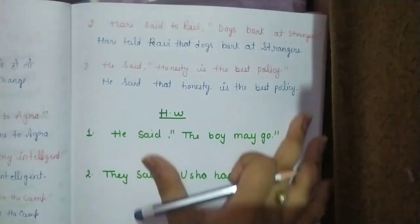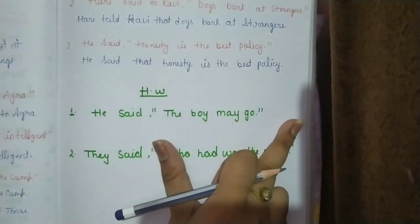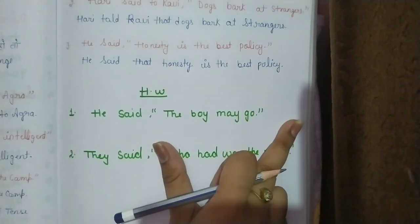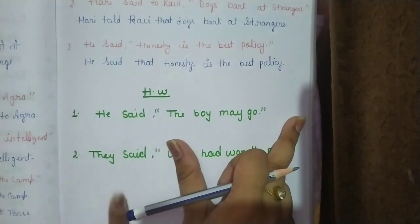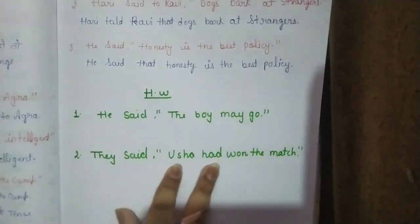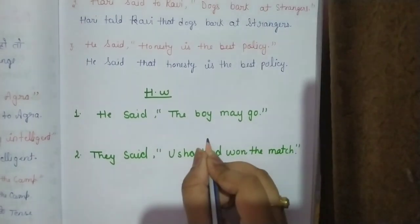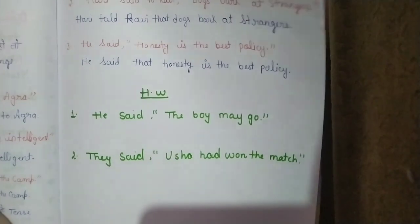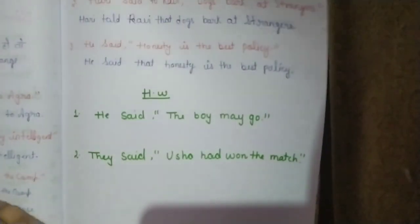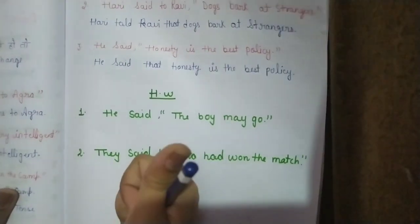I hope you understand the assertive sentences rules. Today's homework: do these in the comment section — 'He said the boy may go' and 'They said Usha had won the match'. Comment your answers. Please like, share and subscribe to my channel.